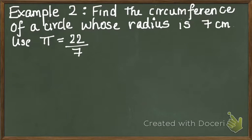Now, let's try another example. Find the circumference of a circle whose radius is 7 centimeters. Use pi is equal to 22 over 7. To begin, we will write down the formula first. So, c is equal to 2 pi r.